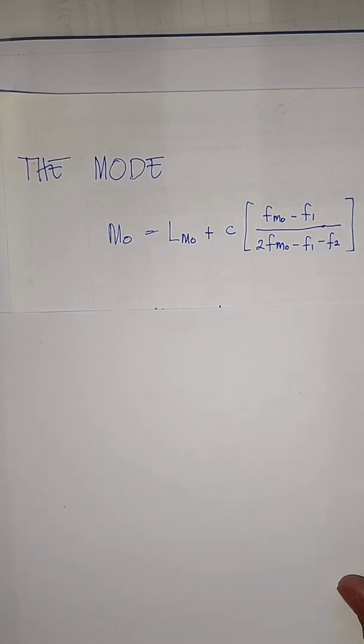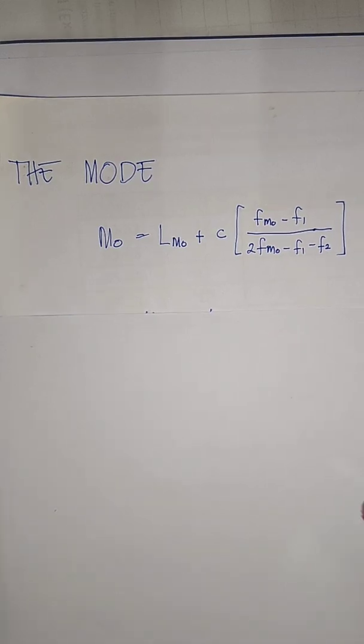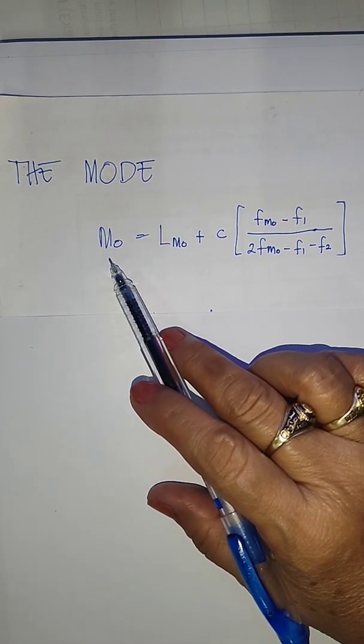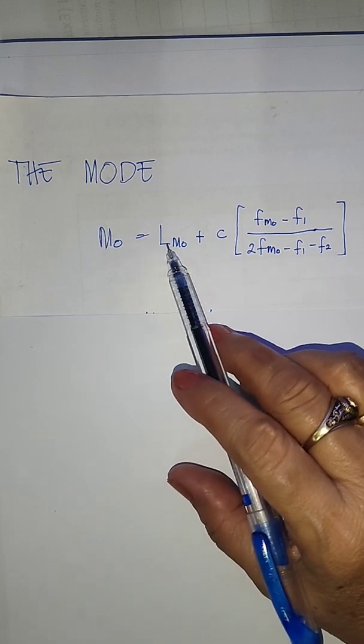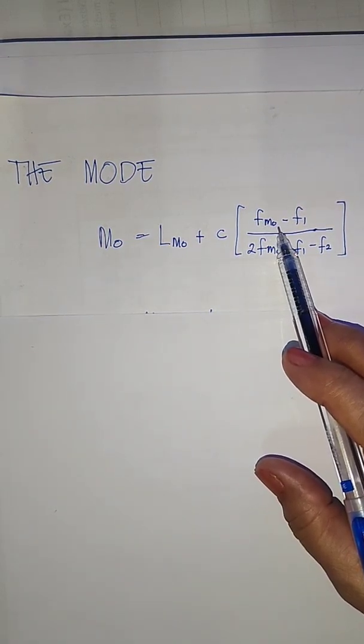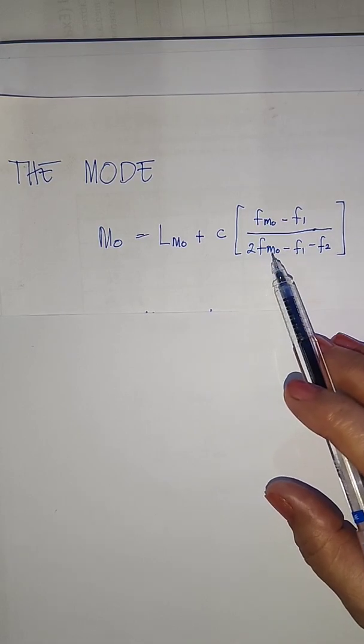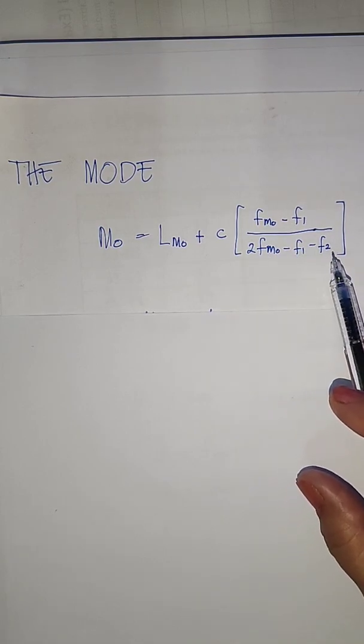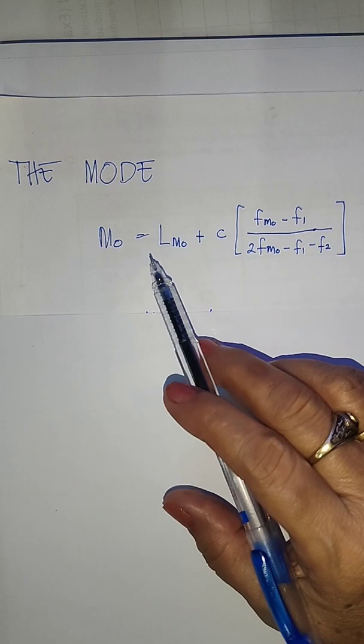Let's now proceed to the third measure of central tendency, which is the mode. We have the formula M sub O, or the mode, is equal to LMO plus C times the quantity of FMO minus F1 over 2FMO minus F1 minus F2.